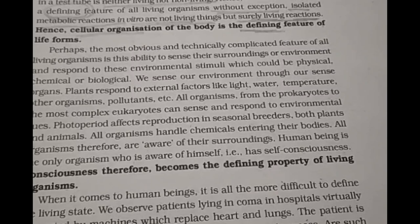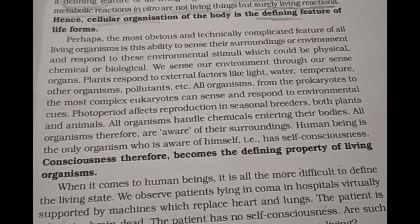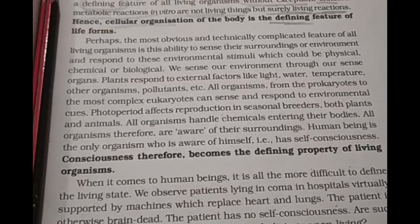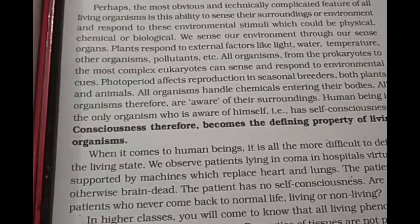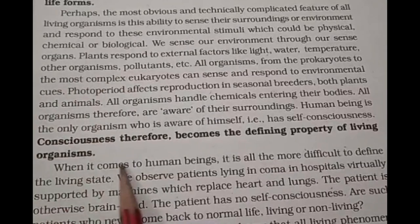Photoperiods affect reproduction in a particular season — only for seasonal breeders. Animals that are seasonal breeders reproduce in specific seasons. But like rabbits and humans, continuous breeders have no special season for reproduction. Some organisms require specific seasonal conditions.